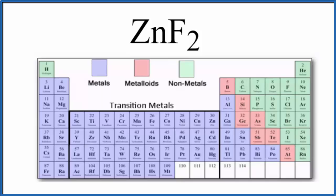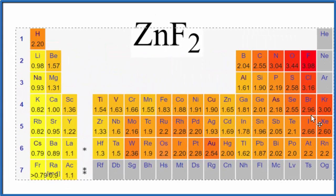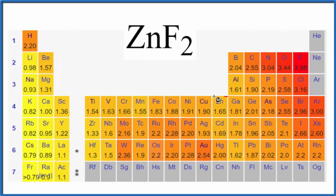We can also take a look at the difference in electronegativity between zinc and fluorine. So again, let's find zinc right here. Zinc is 1.65, fluorine 3.98. So this difference is greater than 2. That means this is an ionic compound.